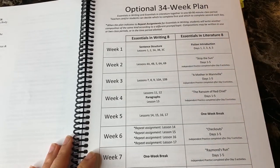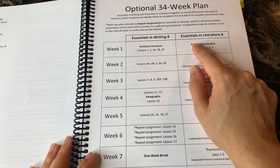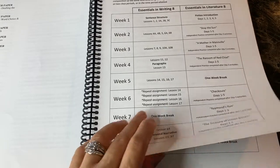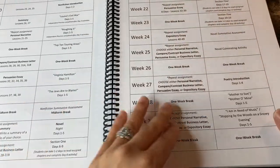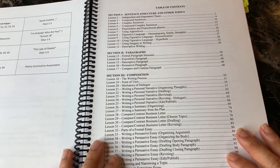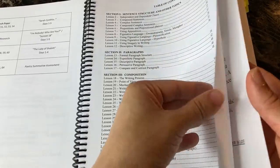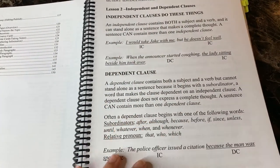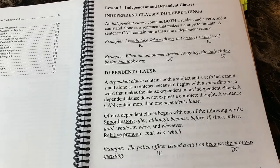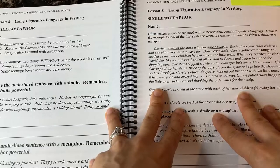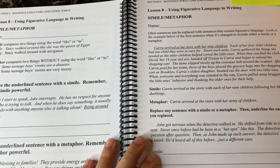One thing about this eighth grade level is that it is not really for a complete school year. If you do a 36-week school year, it's probably about 30 weeks of work, depending on how you split it out. They do have an optional 34-week plan if you'd like to use it in conjunction with the literature — in that plan, they have you taking breaks on certain weeks to do literature. In our case, this worked out to just about enough work up to February, doing it four days a week, Monday through Thursday.